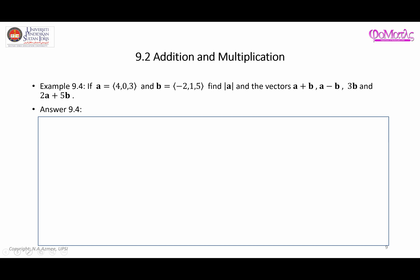Let's look at Example 9.4, a simple example illustrating vector addition and multiplication. We have three-dimensional vectors A and B. First, finding the magnitude of A: it equals the square root of 4² + 0² + 3², which is √(16 + 0 + 9) = √25 = 5 units.